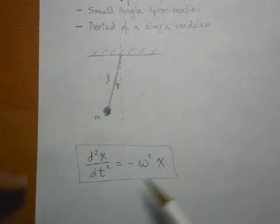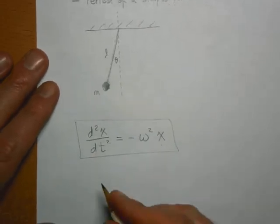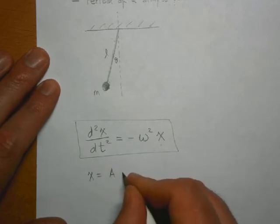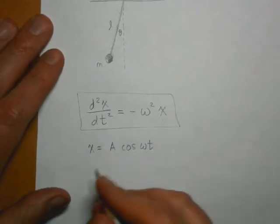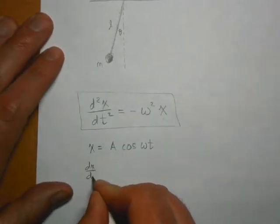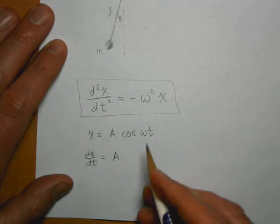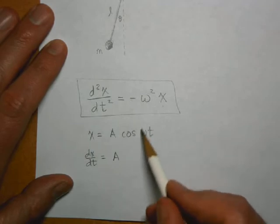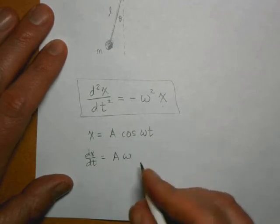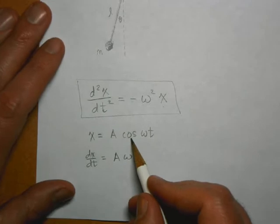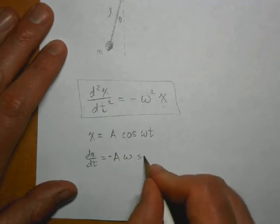Let's review that. If I have x equal to A cosine(ωt), I take the first derivative dx/dt. Keep the A, then use the chain rule and take the derivative of the inside part. The derivative of ωt with respect to t is just omega, and then the derivative of cosine(ωt) is negative sine(ωt).